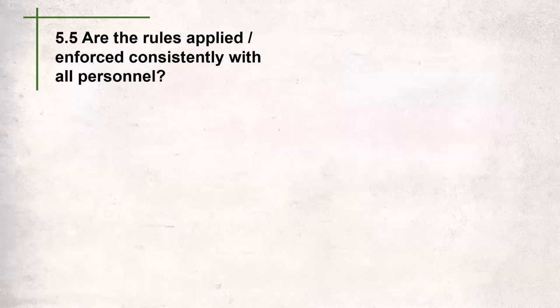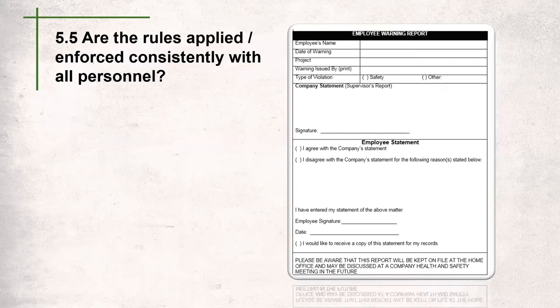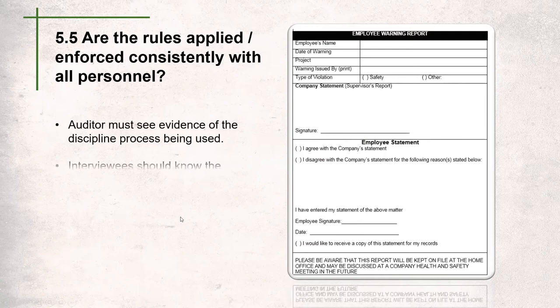The next question is: are the rules applied and enforced consistently among all personnel? To confirm this, the auditor will look through the company's disciplinary records to ensure the policy is being followed and discipline is applied consistently. The auditor will be looking for evidence like an employee warning report — which includes information about the incident, allows the employee to add a statement, and has both parties sign off. During interviews, workers and supervisors should also confirm that discipline is applied consistently.